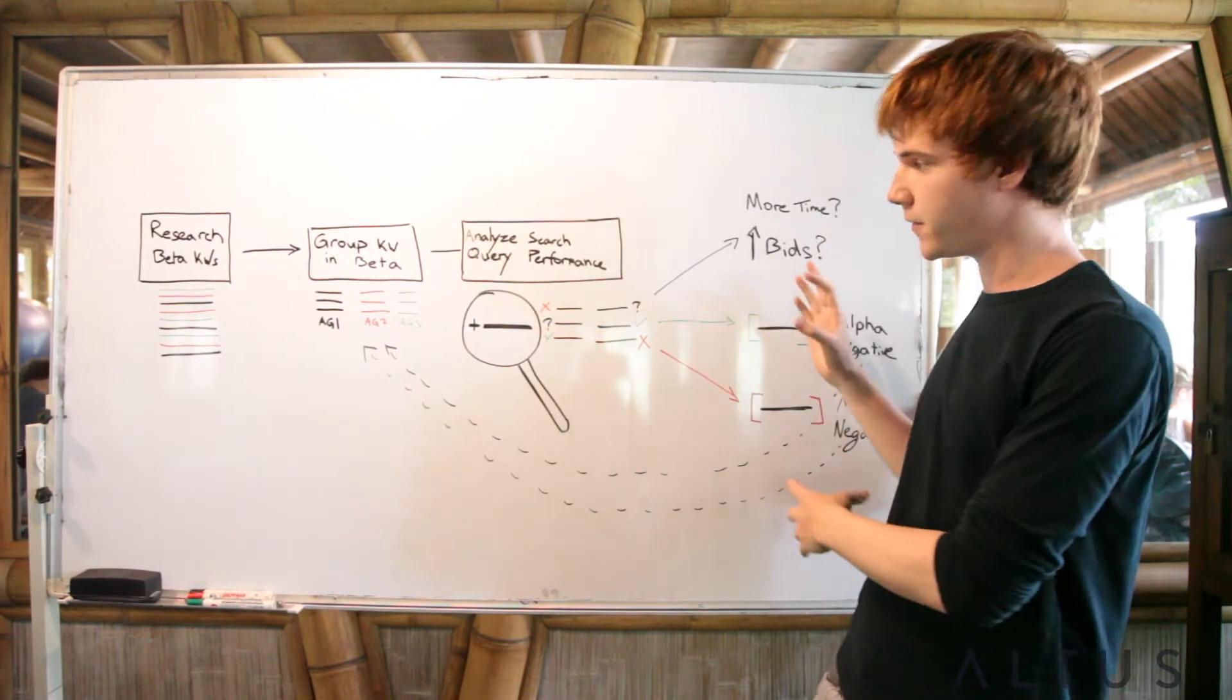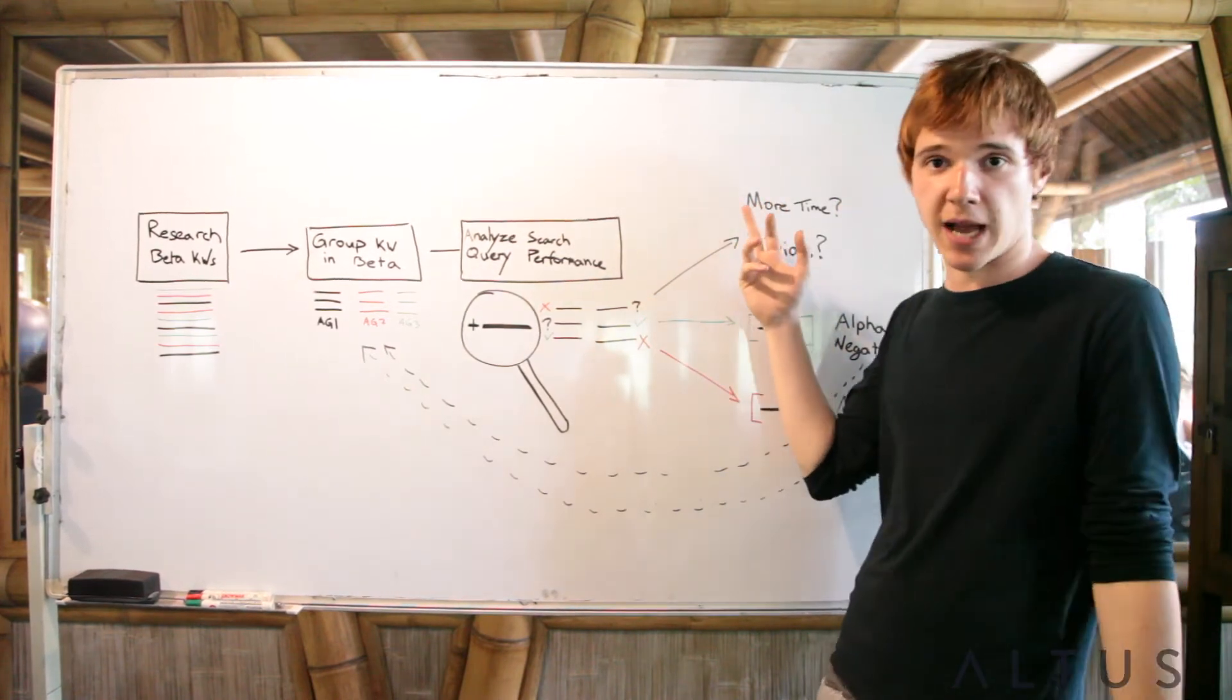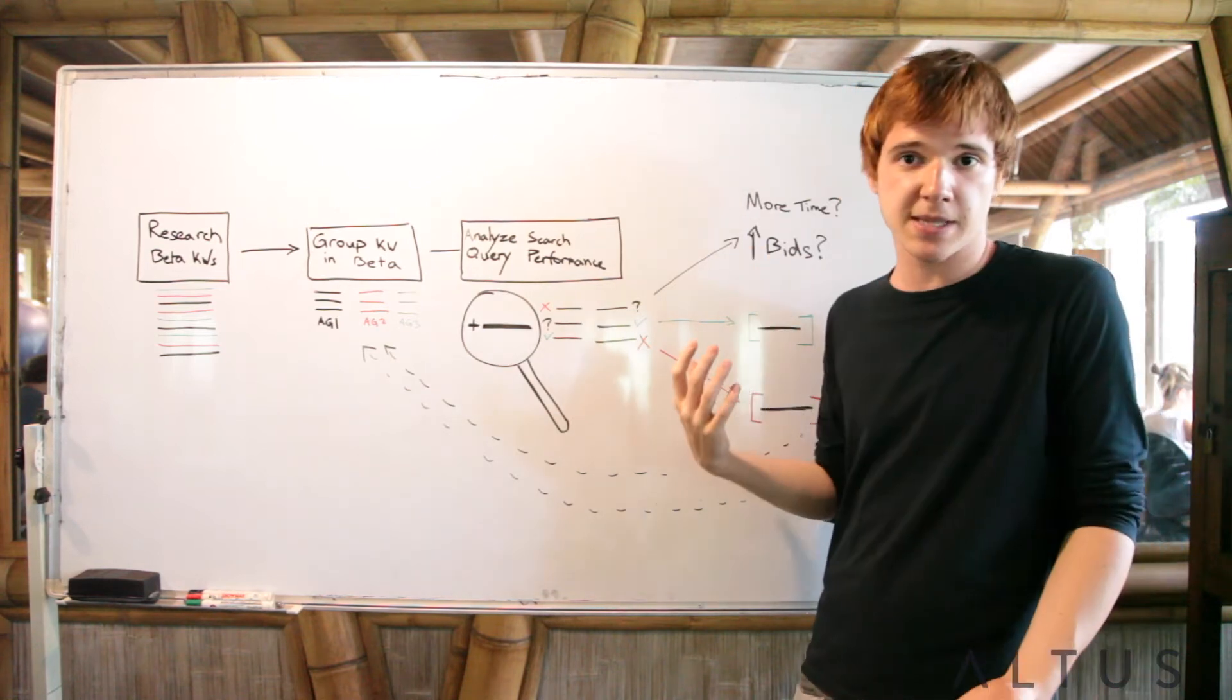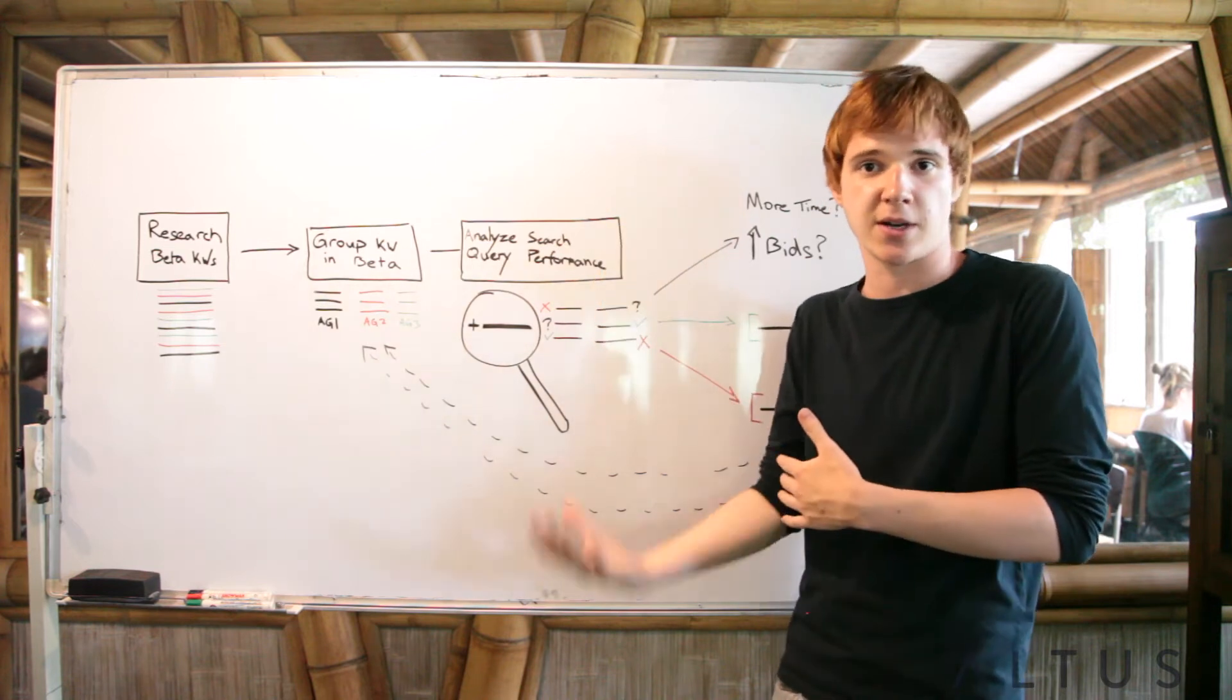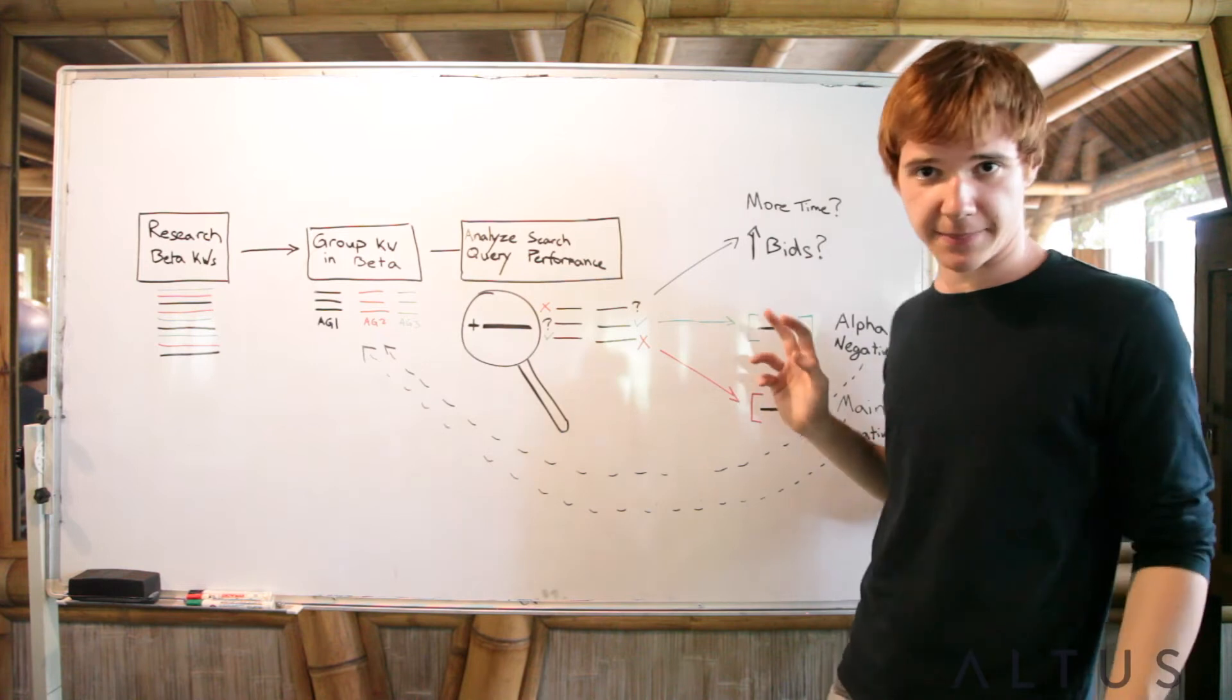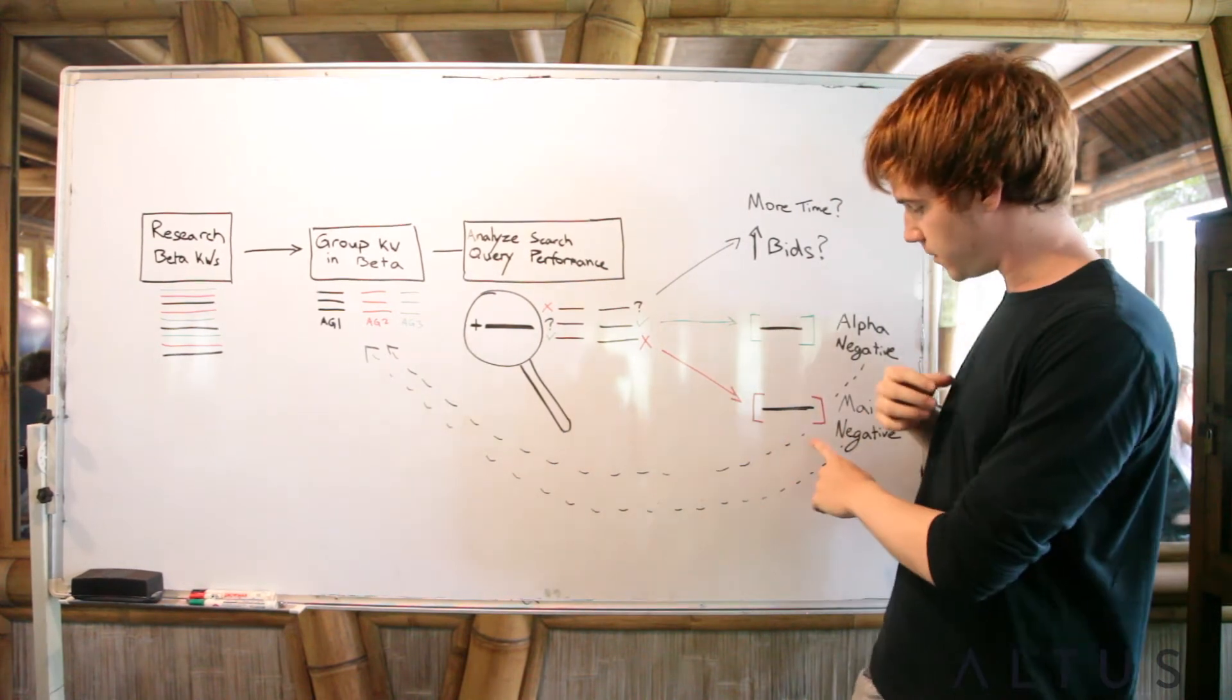For each of these, there's going to be something different that we're going to do. If we don't know what's going on, maybe it just needs more time if it's low search volume. If it's not triggering anything, maybe you need to up the bids a little bit. Maybe you need to get on a support call with a Google rep if you have a group of queries that are not running and you don't know why. If it's a winner, I'll get back to that in just a second because that's a little bit more complex.